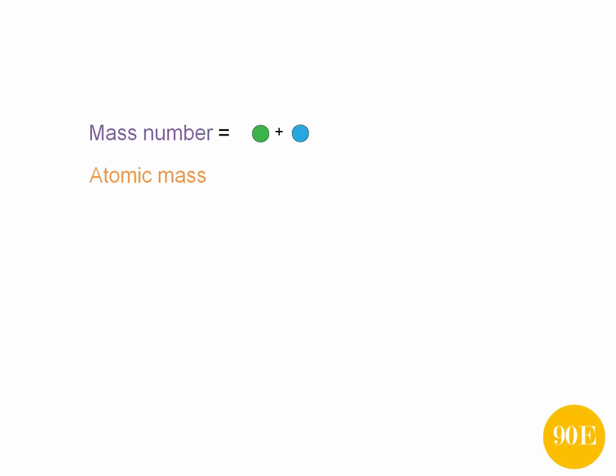The atomic mass, on the other hand, is the actual mass of an atom. That is, it must take into account all the subatomic particles, including electrons.